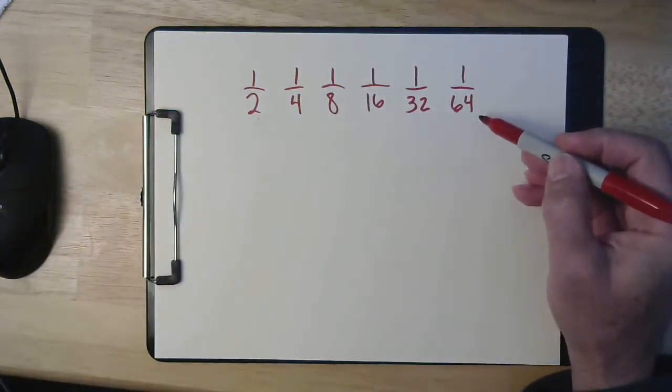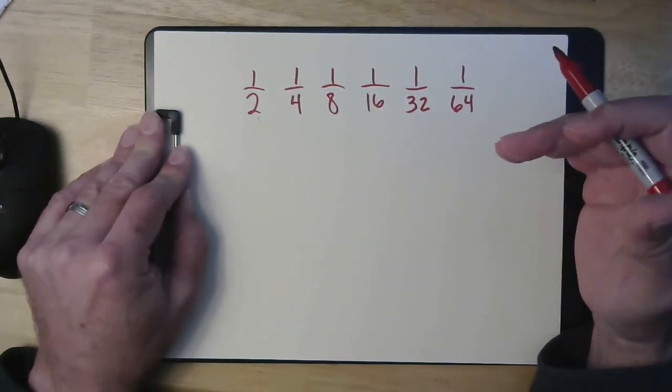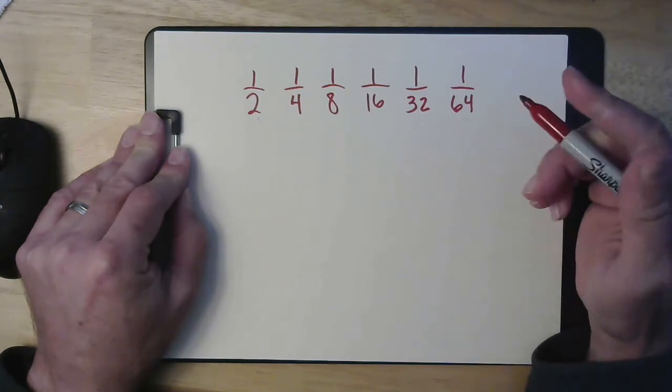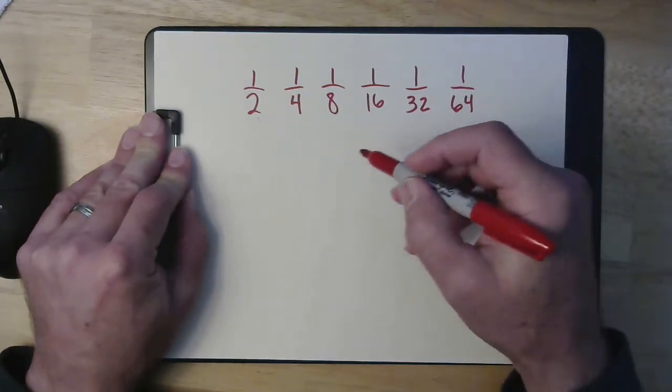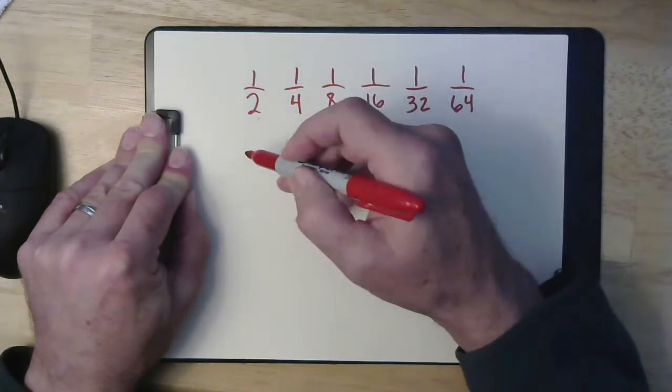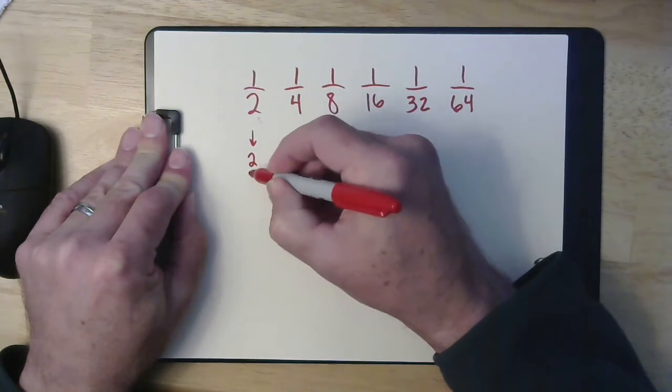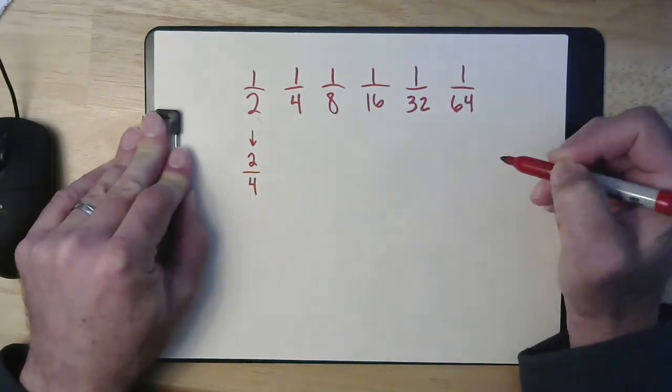The reason that's important is that it allows you to change the denominator in a way that's much easier than it would be otherwise. So in other words, if I want to know, if I want to take a half and know how many fourths that is, it's really easy because I just double the top and the bottom.